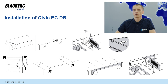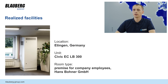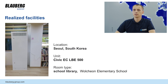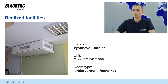There are some examples of how decentralized air handling units are used around the world. In Germany, Civic EC LB-300 units are used in premises for company employees. In Denmark, Civic EC DB-500 units are used in an activity center for the elderly. In South Korea, Civic EC LB-500 units are used in a school library. In Ukraine, in the city of Vyshneve, Civic EC DB-300 units are used in the kindergarten Rysinka.